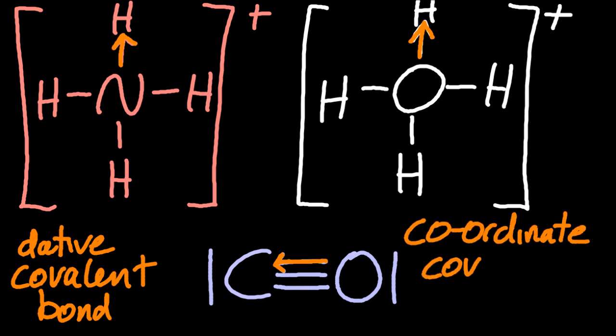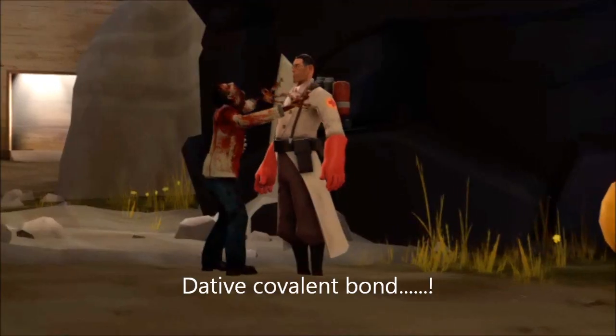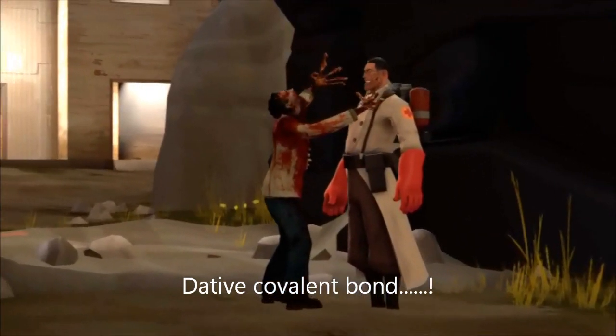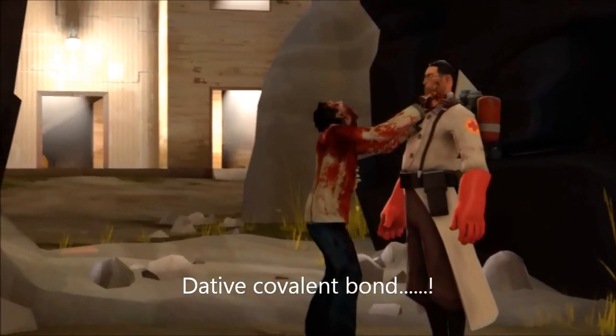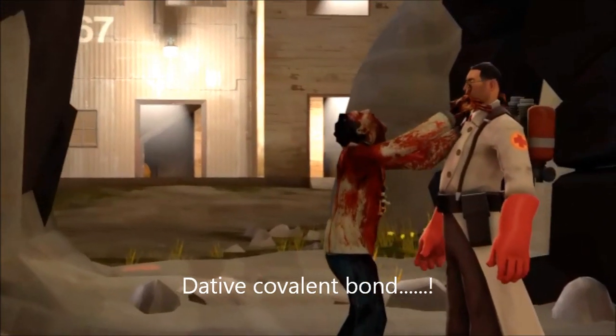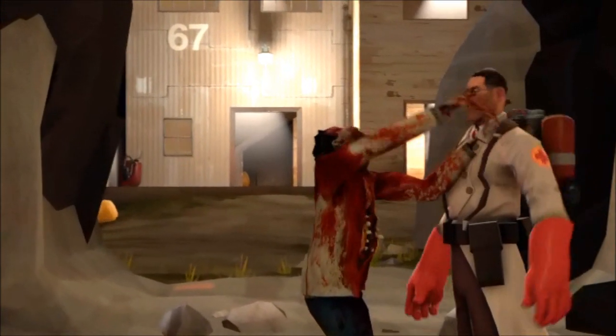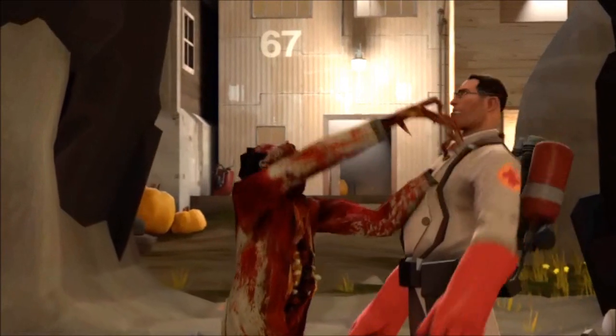When kids forget what a dative covalent bond is, I come over and pretend to strangle them. My two hands, the two electrons, going out towards them. I'm not going to shake their hands. That will be a regular covalent bond, an electron from each. I'm going to go and strangle them. They all seem to remember that. Or if they don't remember it, they never mention it again. I'm trying my patience.